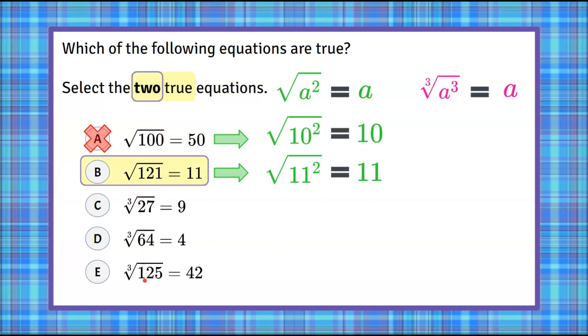Now the rest of our choices are cube roots. Let's look at C. We have the cube root of 27. We're going to write 27 as a power. What factor multiplied by itself 3 times equals 27? That's 3. 3 cubed is 27: 3 times 3 is 9, 9 times 3 is 27. When we take the cube root, it equals the base of the power. So the cube root of 27 is 3. That is not what this equation says. It says it's 9. So we're going to eliminate choice C.